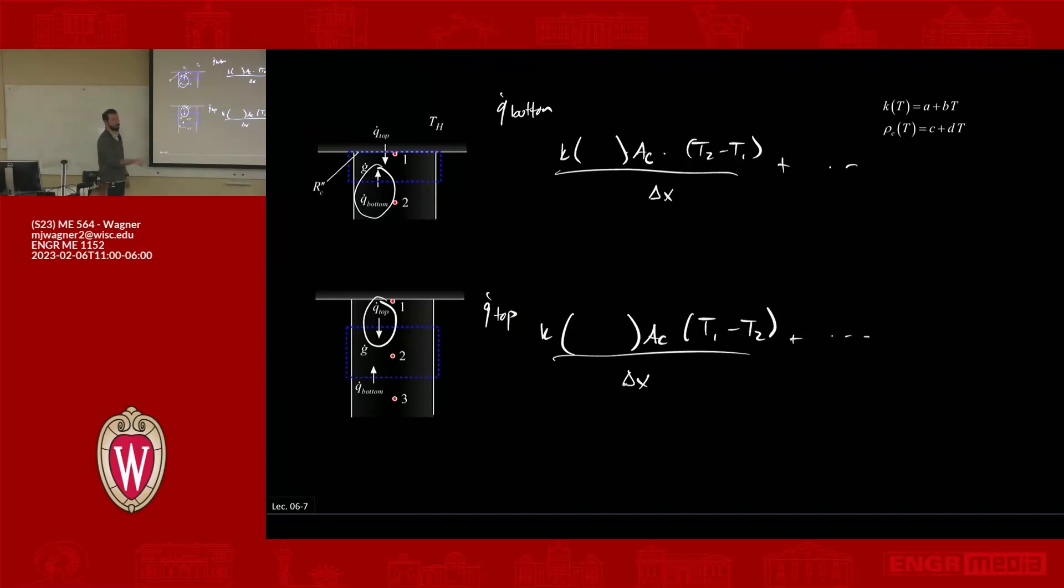So if I have a different conductivity here than I have here, the q dots don't match, potentially. If your q dots don't match, the problem's not going to converge. Because you're saying my q dot in both of those cases, which is represented by this term, it has to be the same. So I need to pick a common temperature that they both share, that their properties can be evaluated. Well, that would be what? That would be this interface between the two nodes.